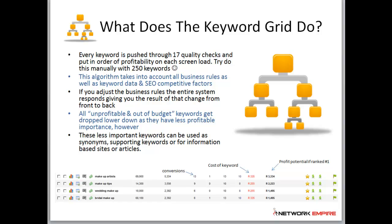This algorithm takes into account all the business rules as well as the keyword data and SEO competitive factors. If you adjust the rules, the entire system responds giving you the results of that change from front to back — meaning wherever something is calculated throughout the entire system, when you change one of your business rules, that change reflects system wide.